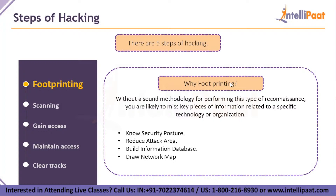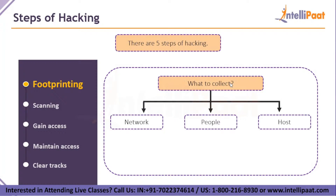We mainly look for four points during footprinting. First, it allows the attacker to know about the complete security posture of an organization. Second, it reduces the attacker's attack area to a specific range of IP addresses, network, domain name, port access, etc. Third, it allows the attacker to build their own information database about the target organization's security weaknesses. And finally, it allows the attacker to draw a map or outline of the target organization's network infrastructure. We usually collect information about three groups: network, host, and people involved.